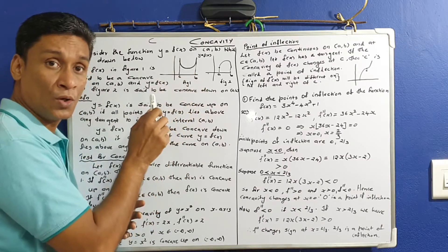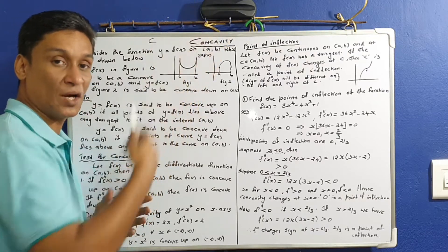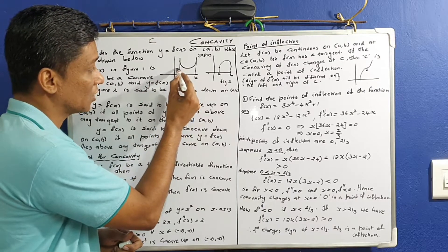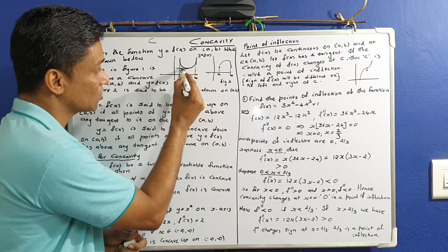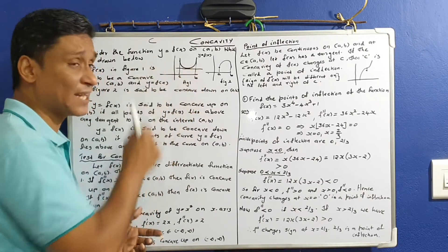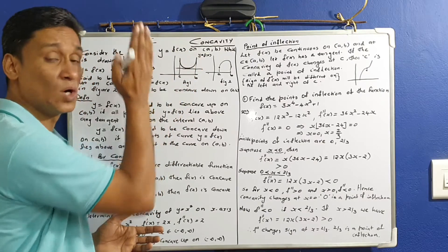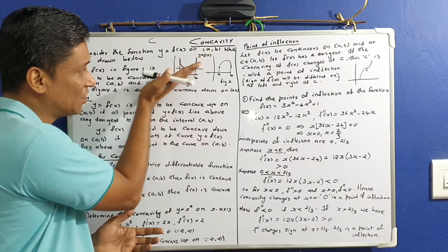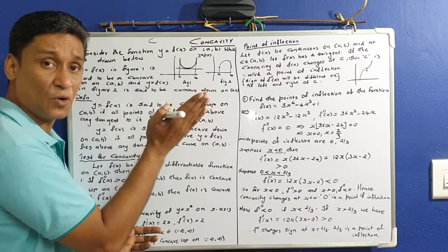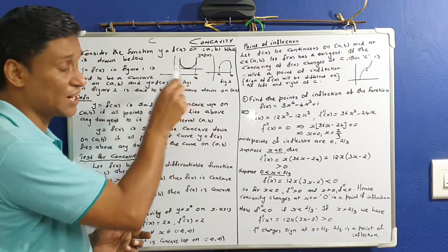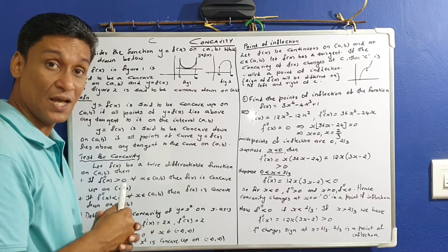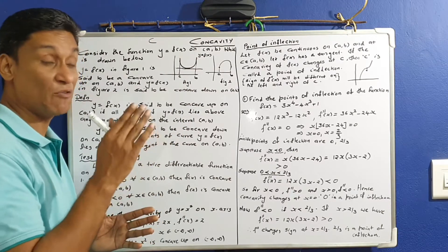We have the tangent at every point of this curve. Suppose this is a tangent — for all points on this curve, every tangent can be drawn. This curve is going to be concave up.